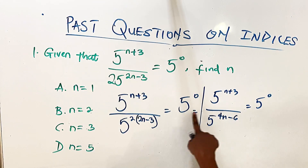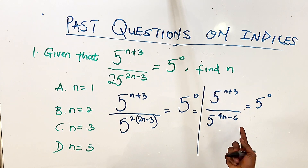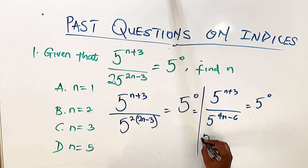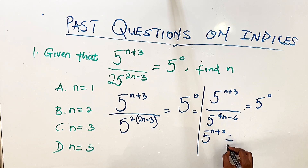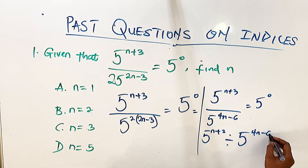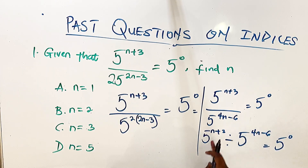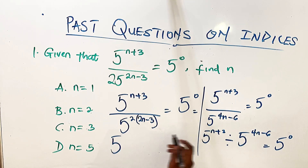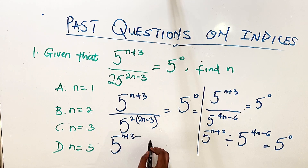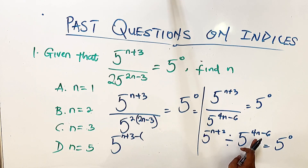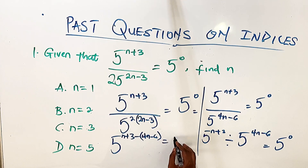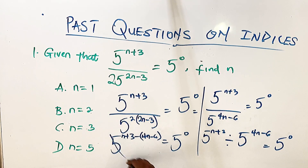Since this fraction line is the same as a division sign, we subtract the powers. We can rewrite this as 5 raised to power n plus 3 divided by 5 raised to power 4n minus 6, equal to 5 raised to power 0. Subtracting and keeping the base, we get 5 raised to power n plus 3 minus open bracket 4n minus 6, equal to 5 raised to power 0. Now we can cancel the base 5 and equate the powers.